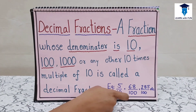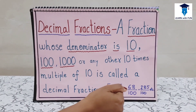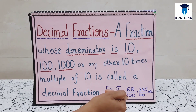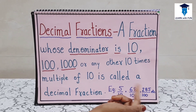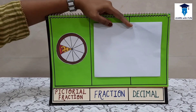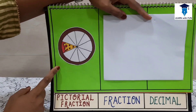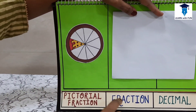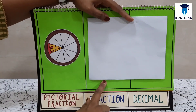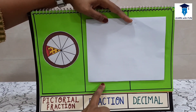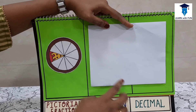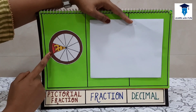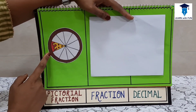Now let's see how to convert a fraction into decimal and how to convert a decimal into fraction, and what is the rule for converting each of them. I am going to explain it using a pizza model. Looking at the pizza model, a child has to write it in terms of fraction, and looking at the fraction, the child has to convert it in terms of decimal. In this pizza, out of 10 pieces, there is only one piece left.